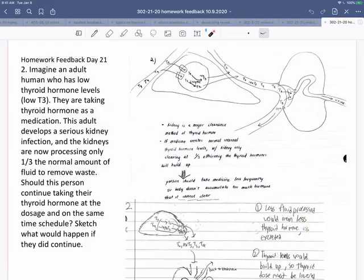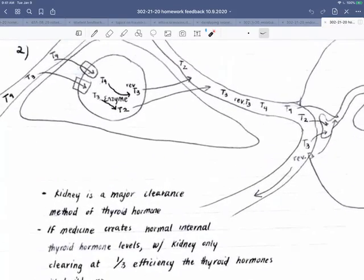The second question was an adult human who has low T3. They're taking thyroid hormone as a medication. They wind up with a serious kidney infection. The kidneys are processing one-third the normal amount of fluid, so showing over here.